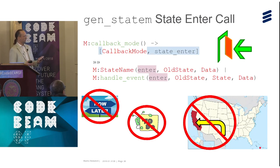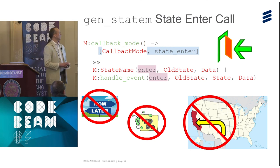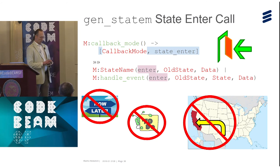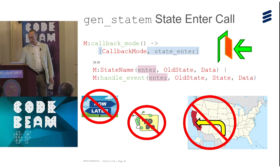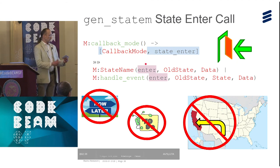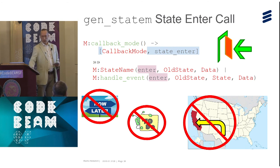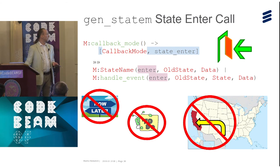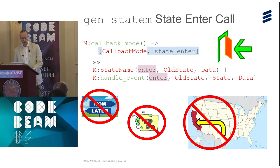The state enter call is a minor mode of the callback mode. You may return a list from the callback_mode function, and if it contains the atom state_enter, the machine will call a state enter callback every time you change states. This is not an event, so it cannot be postponed. You cannot insert events or change states within the state enter callback — which would be rather silly, since you are already entering a state.